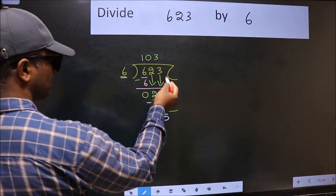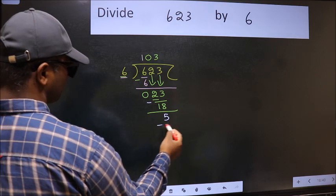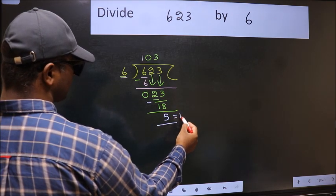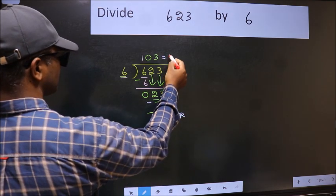No more numbers to bring down, so we stop here. This is our remainder and this is our quotient.